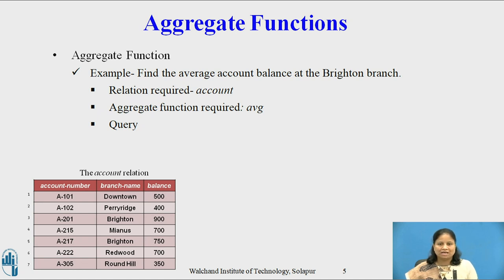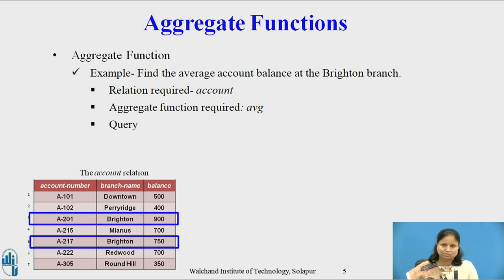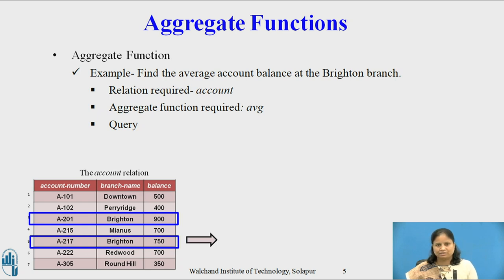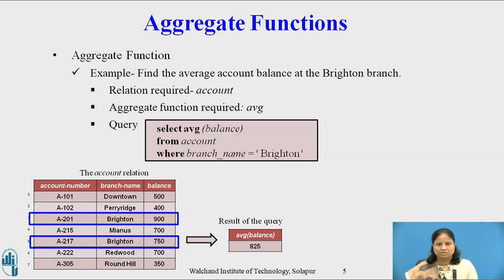Find the average account balance at the Braynton branch. The relation required is Account, which consists of 3 fields: Account Number, Branch Name, and Balance. The aggregate function required is Average. We apply the average function to the field Balance where Branch Name is Braynton. There are 2 tuples with balances 900 and 750, so the result is 825. The query is: SELECT AVG(balance) FROM account WHERE branch_name = 'Braynton'.